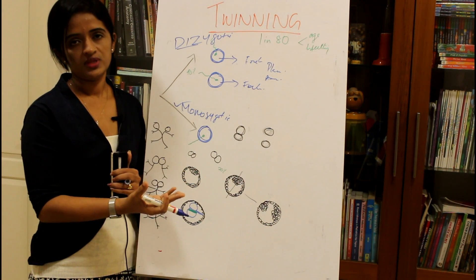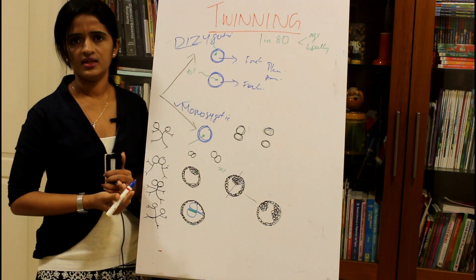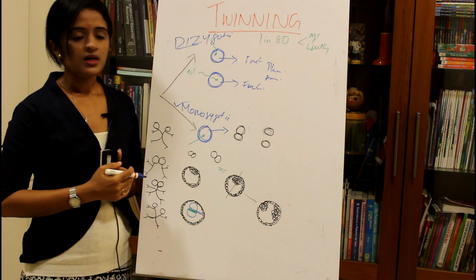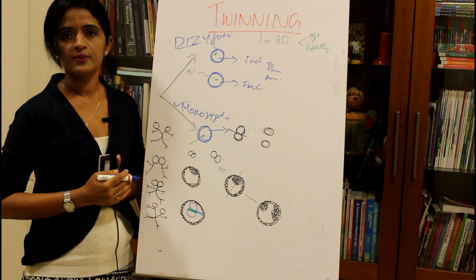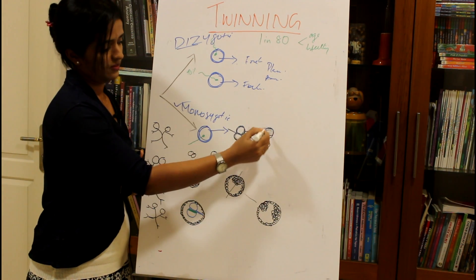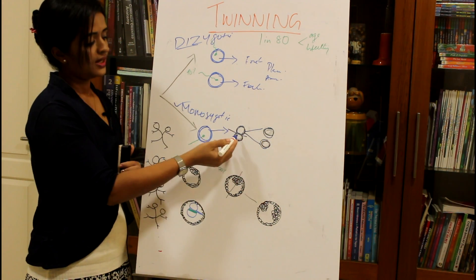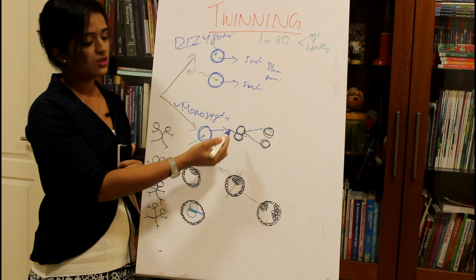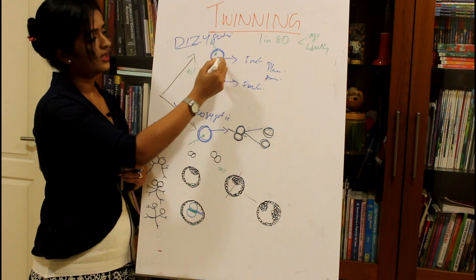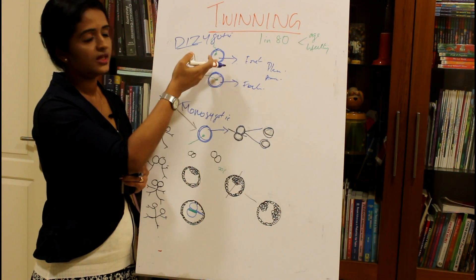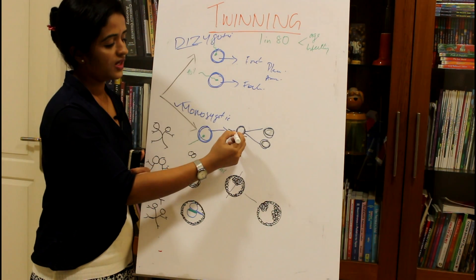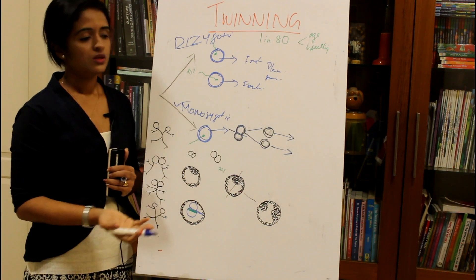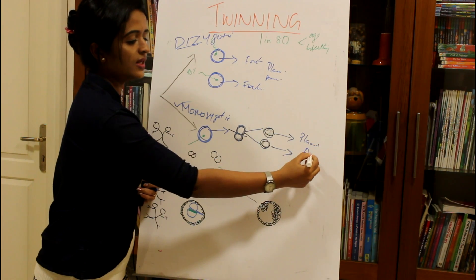The different varieties of monozygotic twins depend on the time of division of the zygote. In the first variety, the zygote undergoes cleavage and at the two-cell stage it divides. At this point, neither the chorionic cavity nor the amniotic cavity has formed. The two cells separate and resemble what happens in dizygotic twinning, forming two different fetuses.